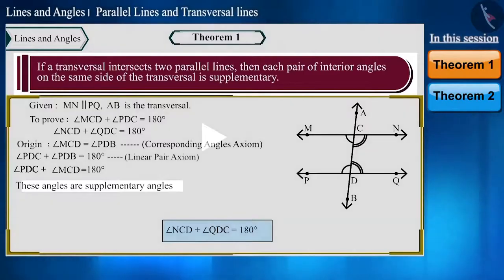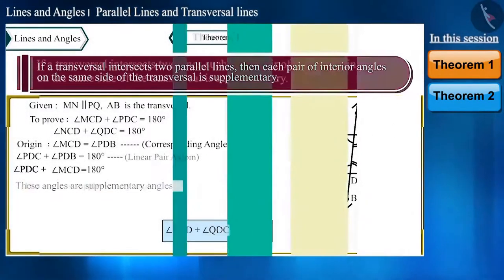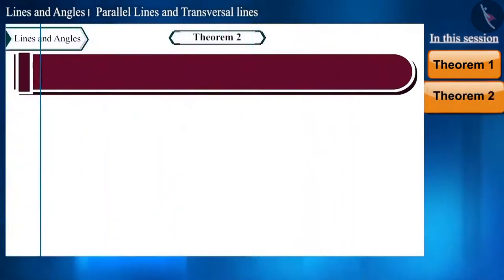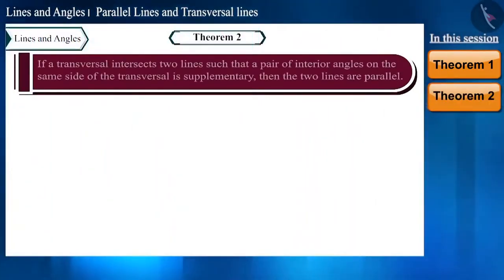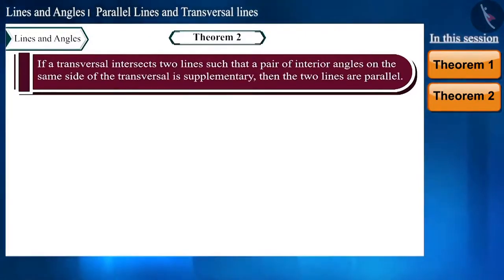Pause the video and try to prove it yourself. In our next question, we will prove the converse of this theorem: if a transversal intersects two lines such that a pair of interior angles on the same side of the transversal is supplementary, then the two lines are parallel.